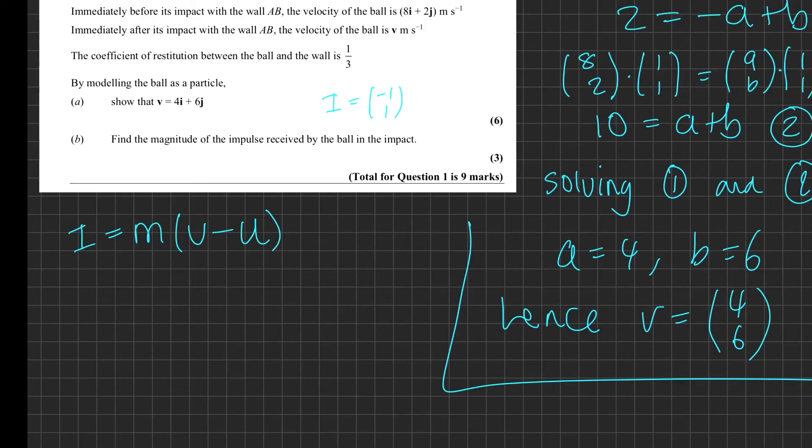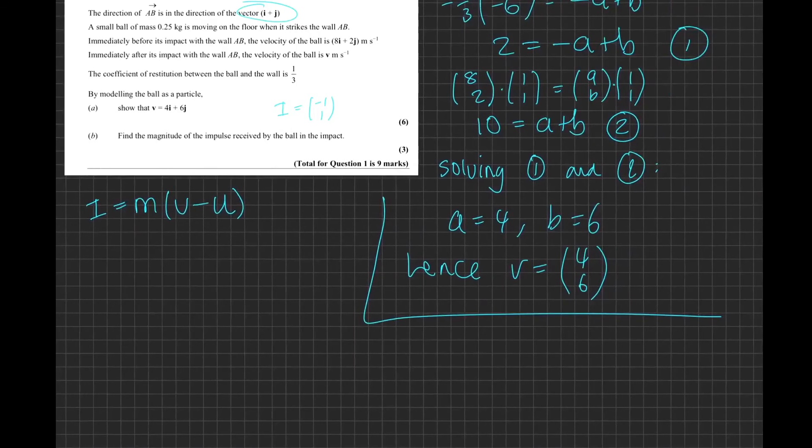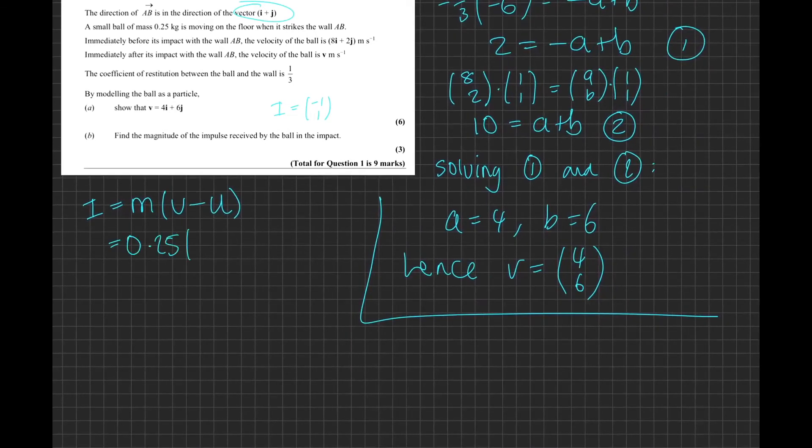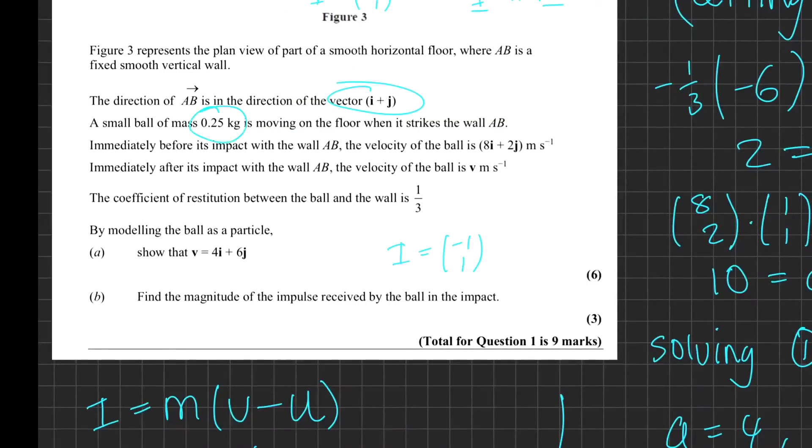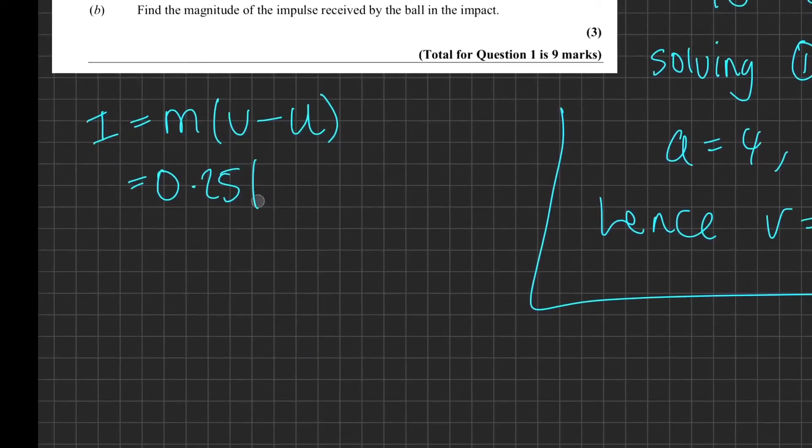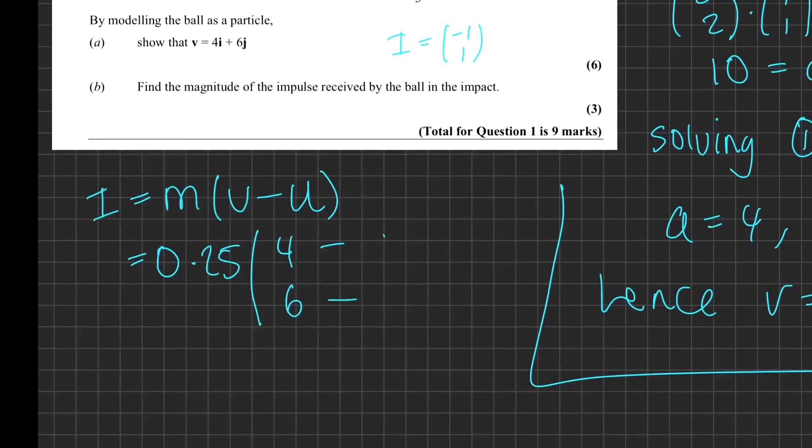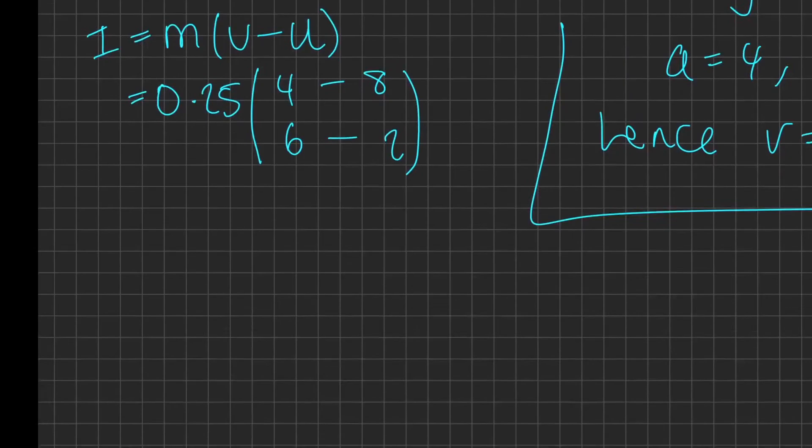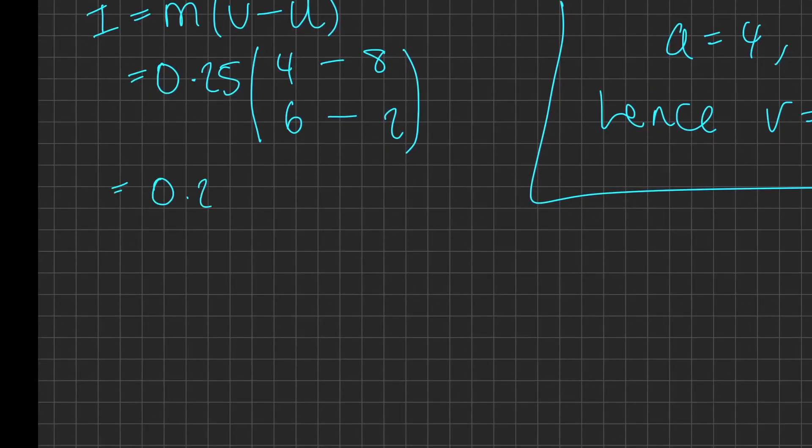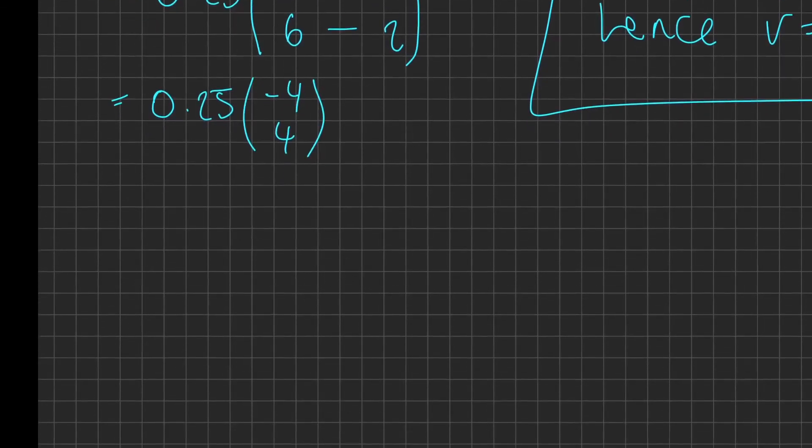And the change in velocity we can write as the final velocity minus the initial velocity like this: v - u. So we're just going to plug in our values. We know that the mass is 0.25 kilograms. We know that the final velocity, well we've just found this, that is (4,6), and we're going to be taking away the initial velocity, which we know is (8,2). So we get 0.25 multiplied by (4-8, 6-2), that's (-4,4), and 0.25 times (-4,4) is just (-1,1).